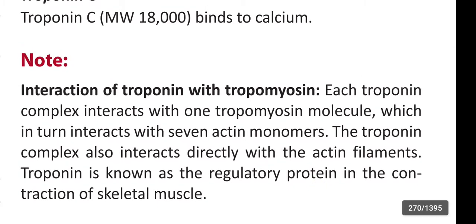Regarding the interaction of troponin with tropomyosin: each troponin complex interacts with one tropomyosin molecule, which in turn interacts with seven actin monomers. The troponin complex also interacts directly with the actin filaments. Troponin is known as the regulatory protein in the contraction of skeletal muscle.